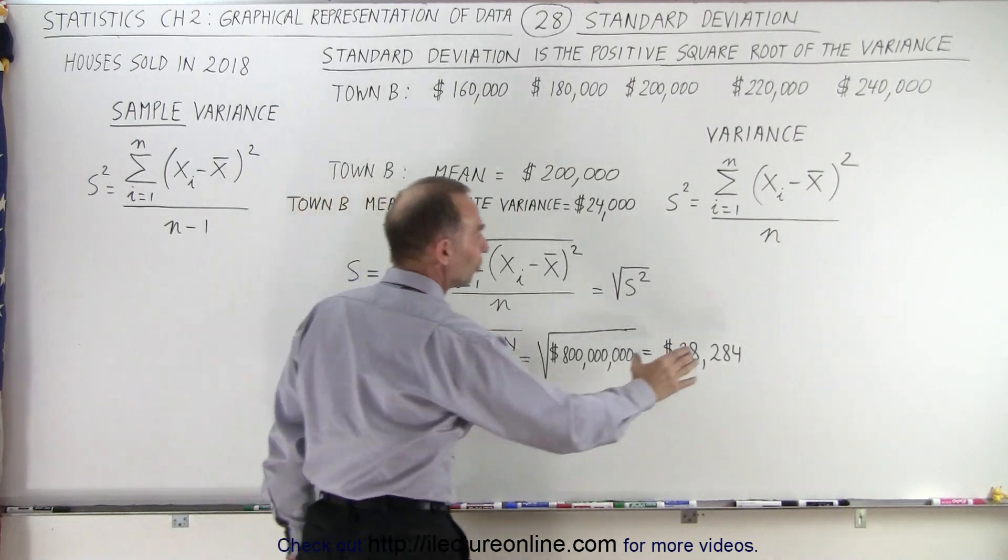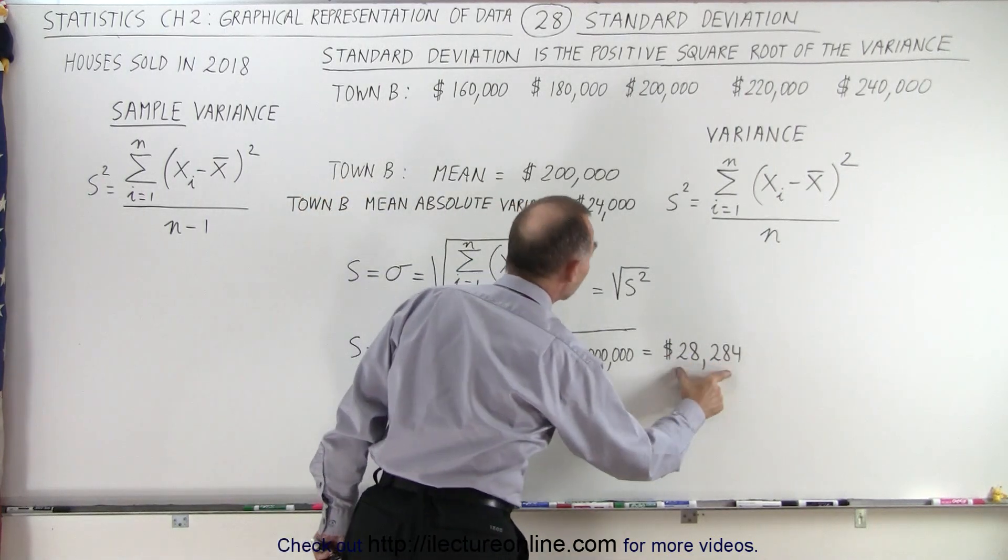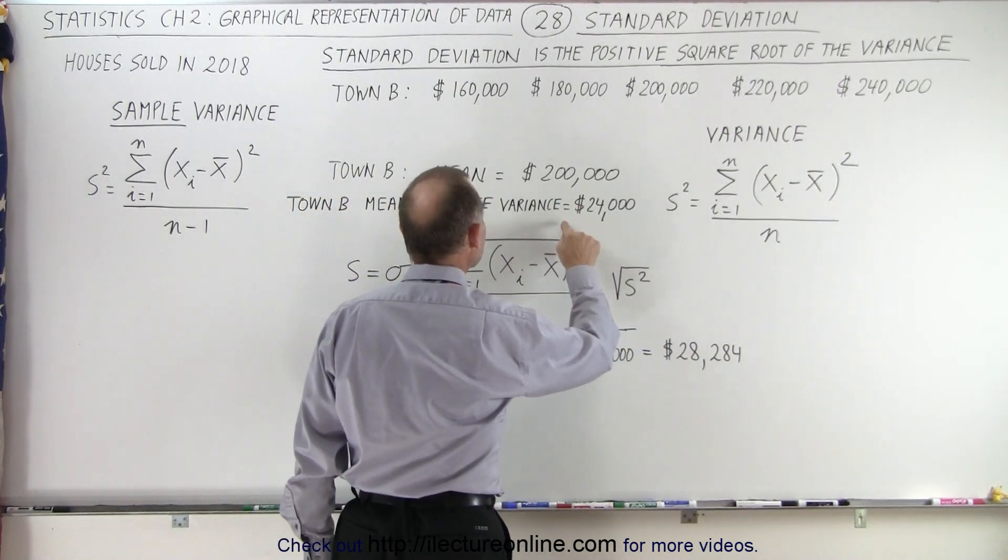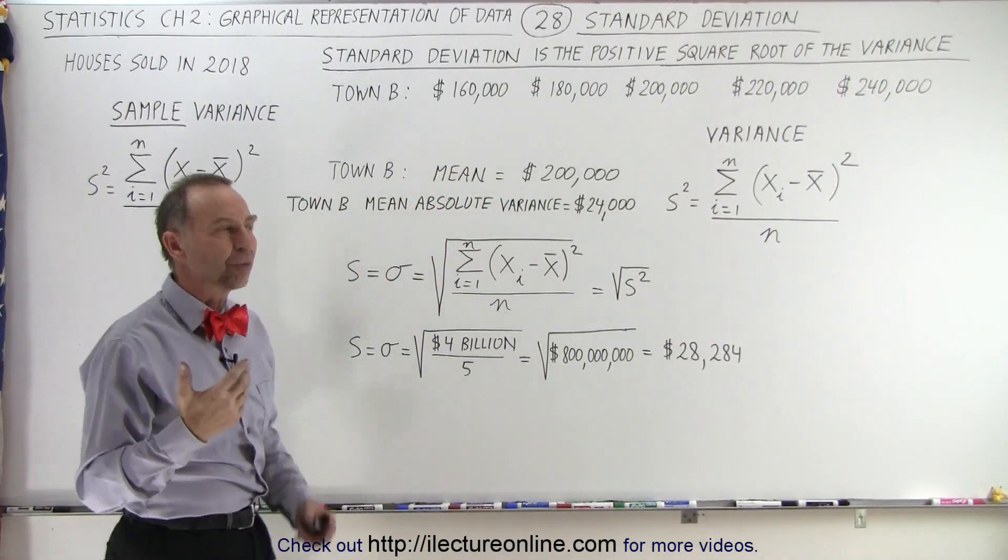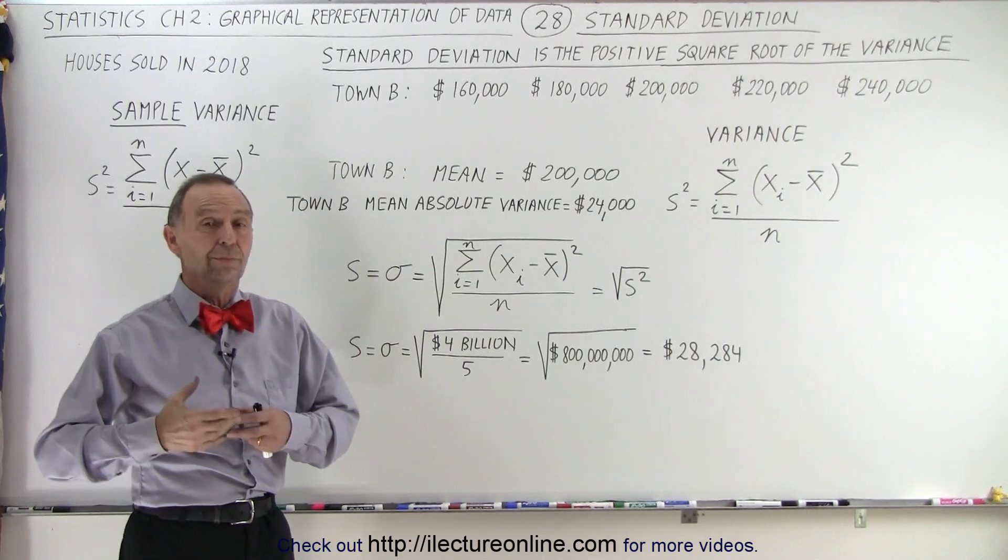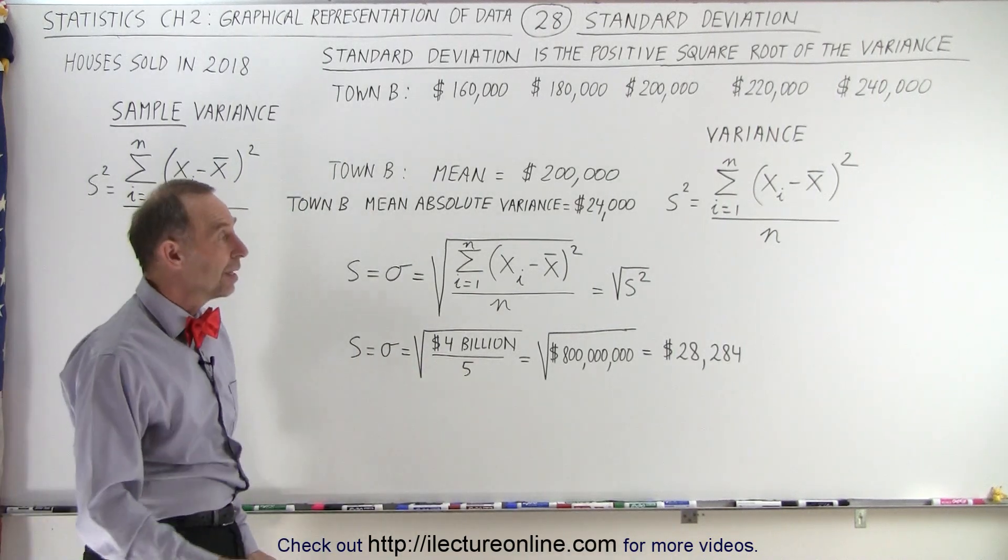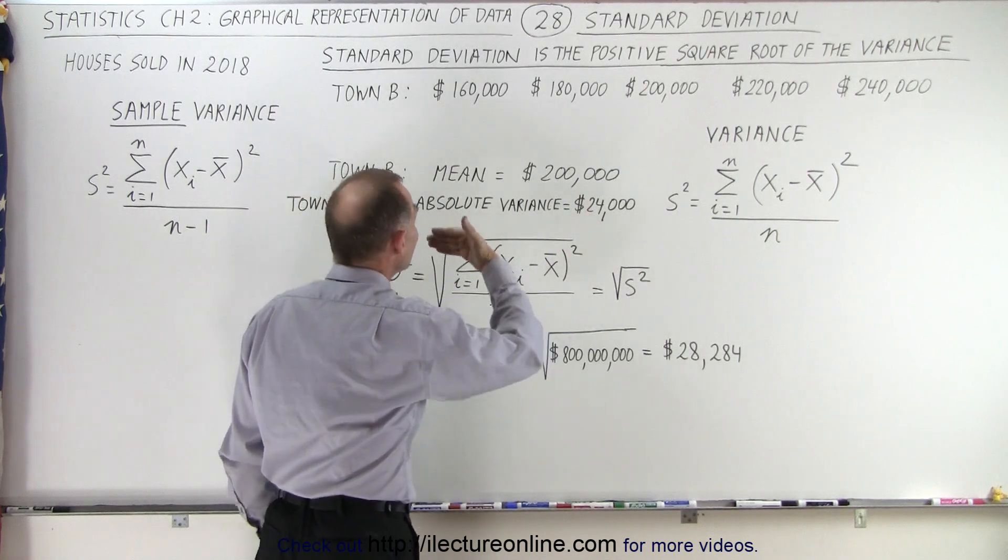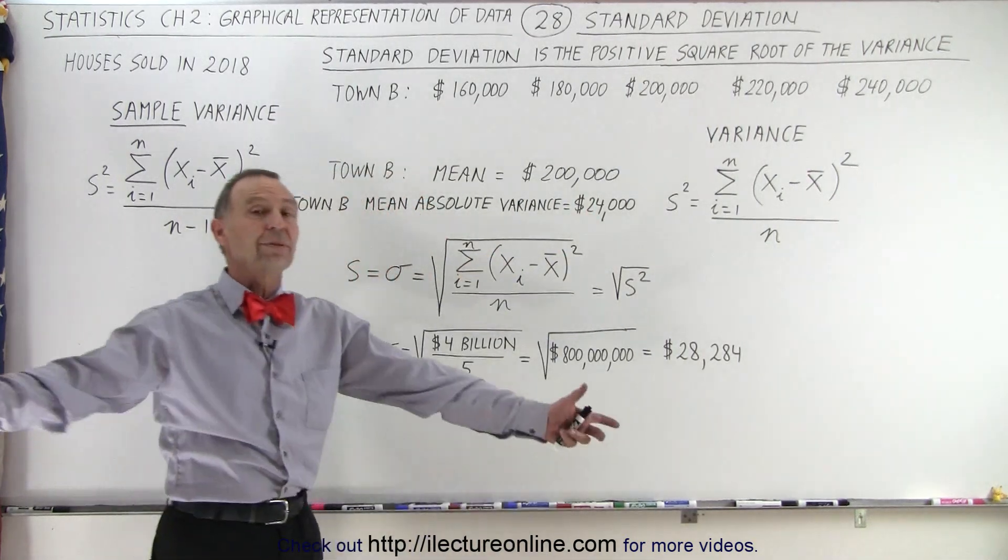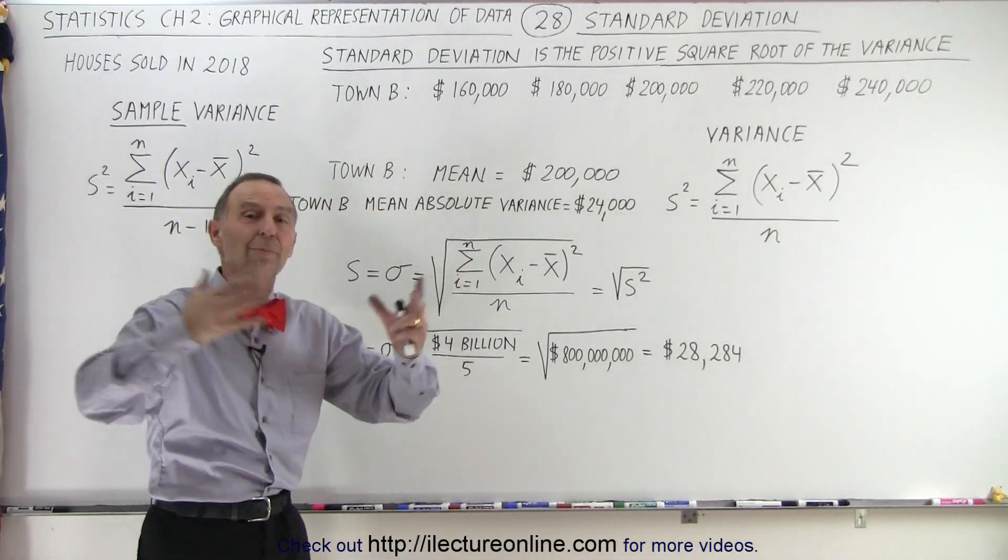Now, notice the standard deviation is a bigger number than the mean absolute variance. For the daily experience of a typical person going to buy a house in Town B, you want to know what the average price was, and you want to know what the mean absolute variance is. What is the typical difference between the average price and the price of the houses?